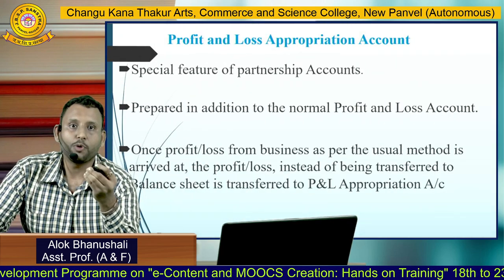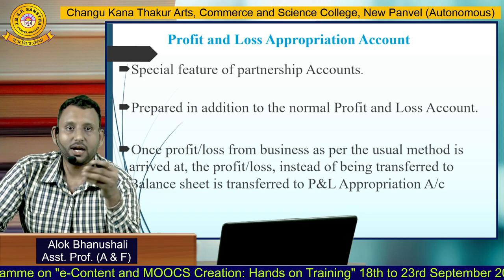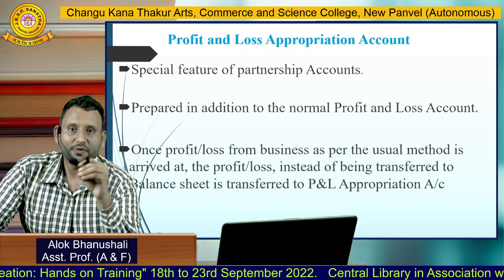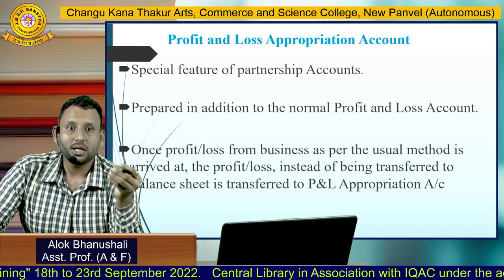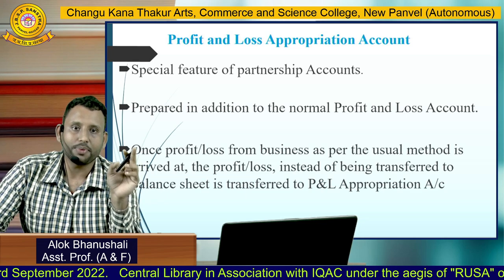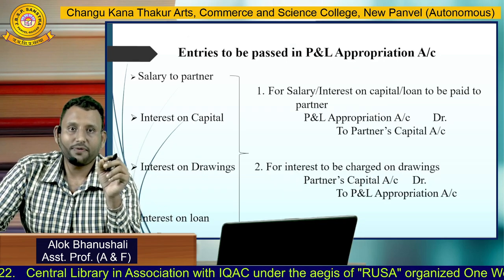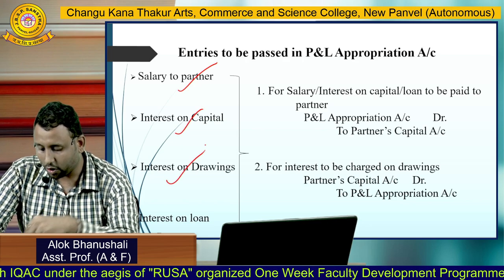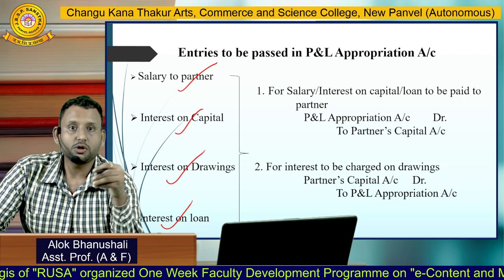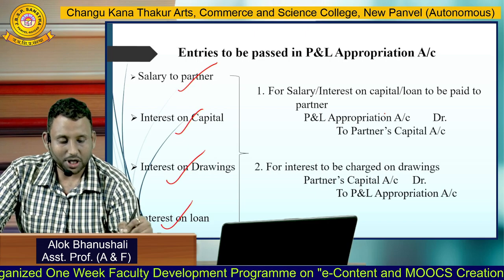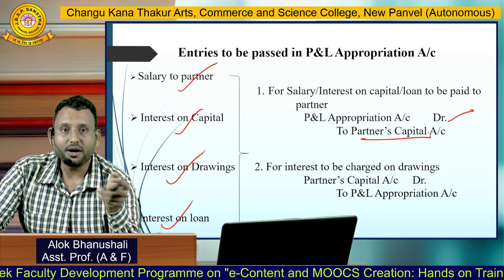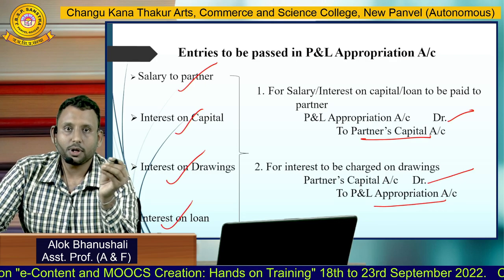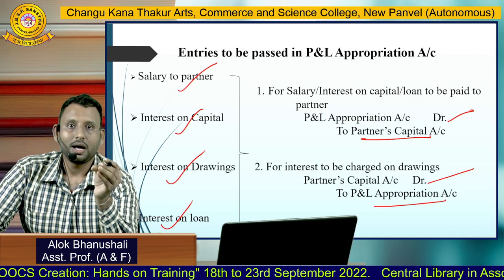The last topic is the profit and loss appropriation account. In partnership, we prepare a profit and loss appropriation account, which is a special feature of partnership accounting prepared in addition to the normal profit and loss account. Once profit from business is arrived at via the usual method, it is transferred to the profit and loss appropriation account instead of directly to the balance sheet. Entries passed here relate to salary to partners, interest on capital, interest on drawings, and interest on loan. If salary or interest on capital is paid to a partner, the entry is: P&L Appropriation Account debit to Partner's Capital Account. For interest charged on drawings, the entry is reversed: Partner's Capital Account debit to P&L Appropriation Account.